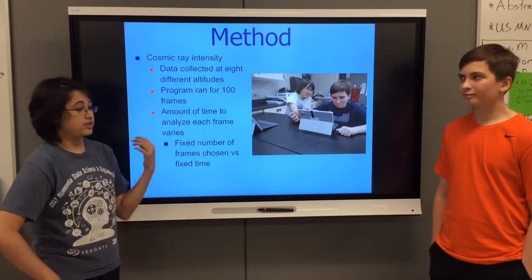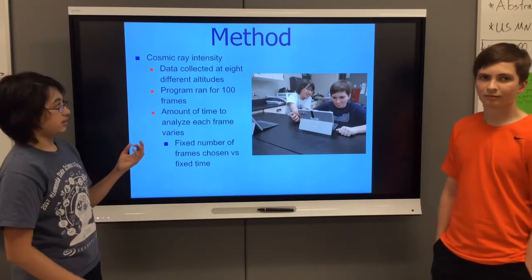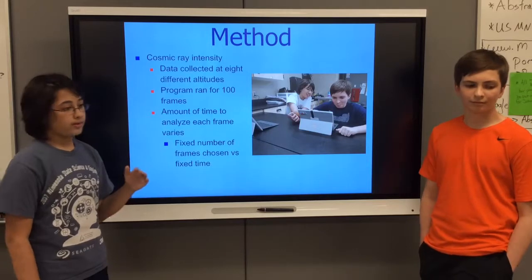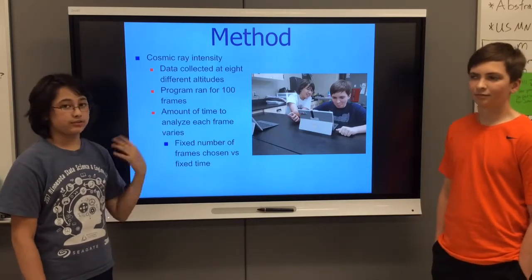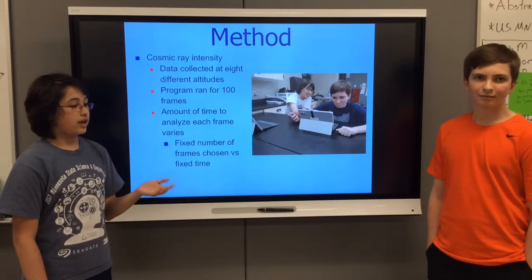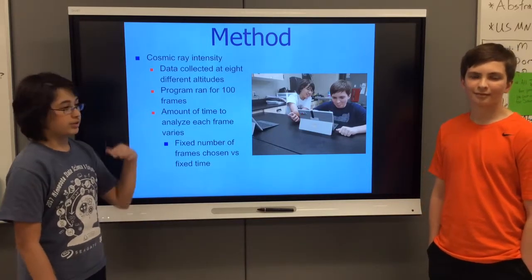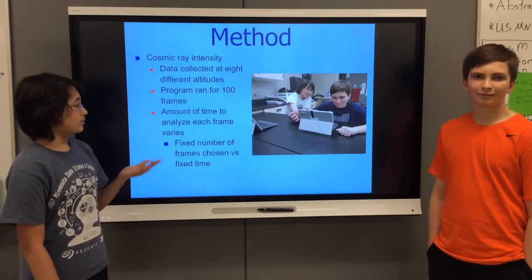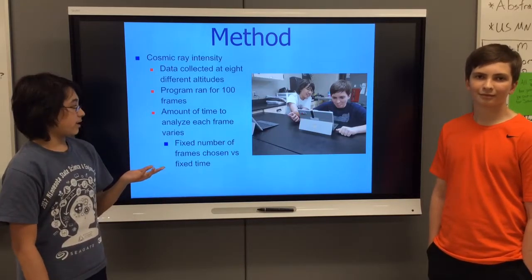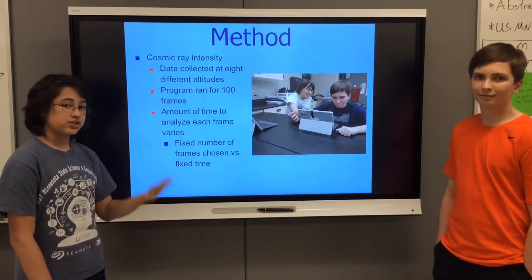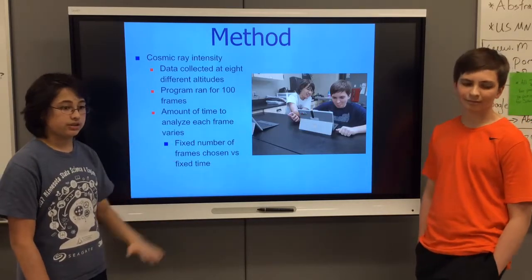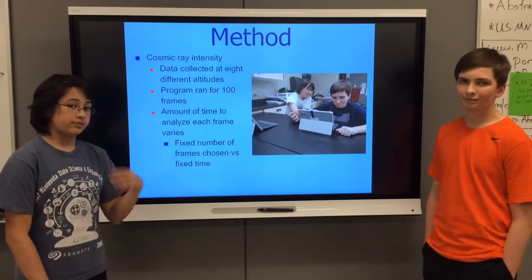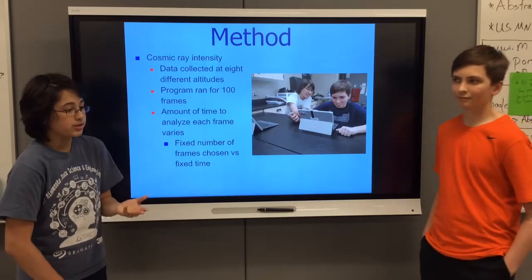Our cosmic ray intensity, meaning the different locations that we tested, was collected at eight different locations and elevations. Each place that we collected data was taken with 100 frames, and the amount of time to analyze each set of data varied — instead of a set time, it was a fixed number of images.